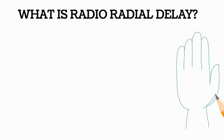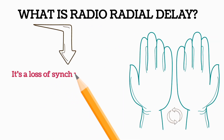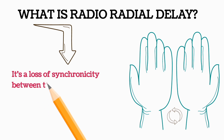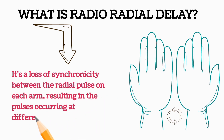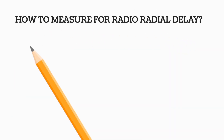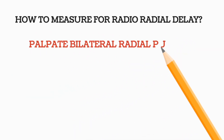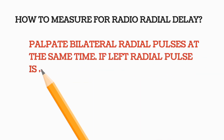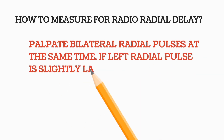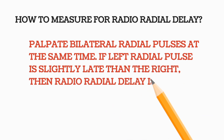Let's discuss radio-radial delay. It is a loss of synchronicity between the radial pulse on each arm, resulting in the pulses occurring at different times. To measure for radio-radial delay, you have to palpate bilaterally the radial pulses at the same time. If the left radial pulse is slightly late compared to the right radial pulse, it is called radio-radial delay.